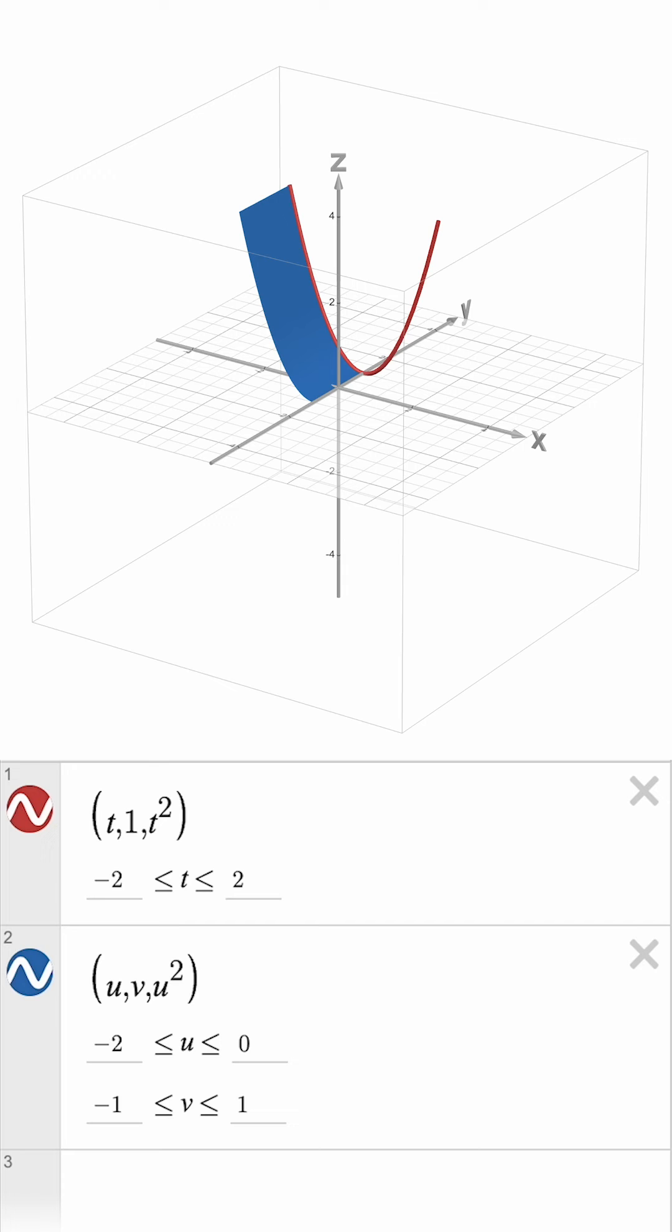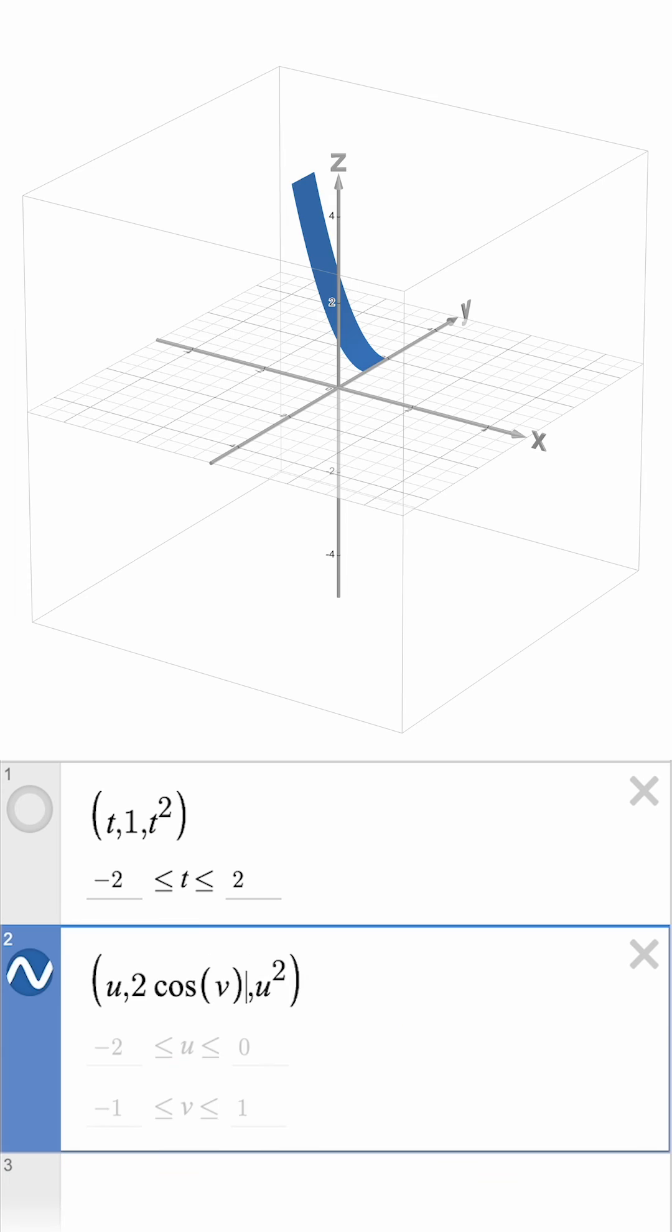We can also use trig functions in parametric equations. Let's change our y and z coordinates to 2 cosine of v, 2 sine of v.